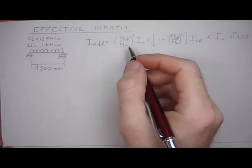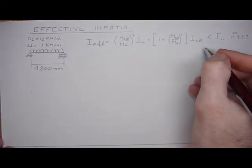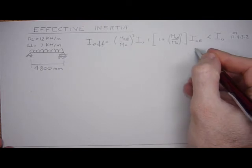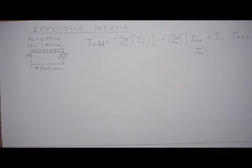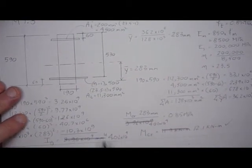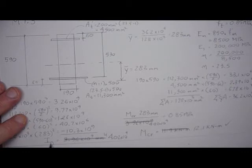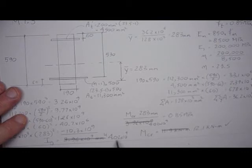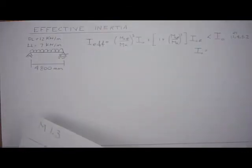So first we've got to get the parameters. So the I naught. Well, we already calculated that in tutorial 1.3. Let's put that down. So the cracking moment, or the gross moment I naught, I call it I gross here, but it's 4.02. That's the gross, 4.02 times 10 to the 9.